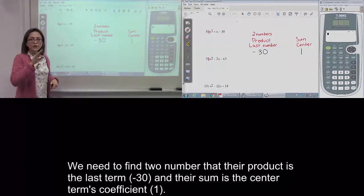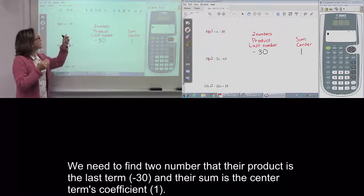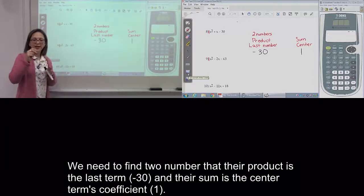We need to find two numbers. The product is the last number, negative 30, and the sum is the center, plus 1.